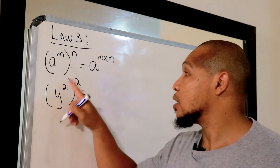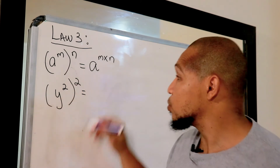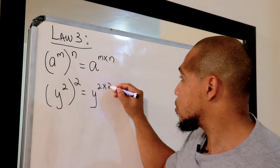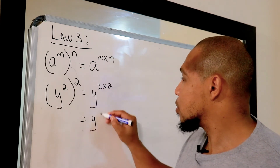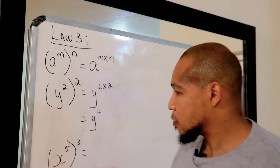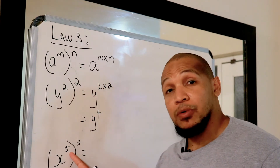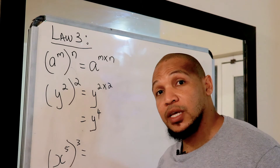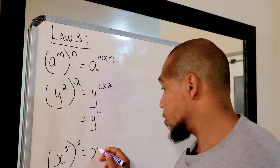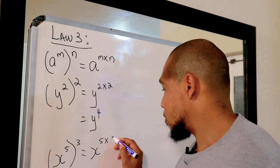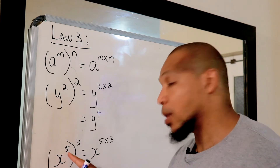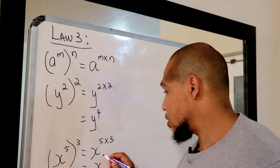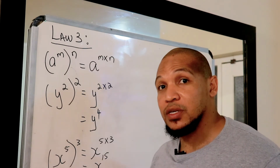For example, y squared in brackets to the power of two equals y to the power of four. And x squared in brackets to the power of three — we have three as the exponent on the outside — so we multiply the exponents, and the answer is x to the power of fifteen.